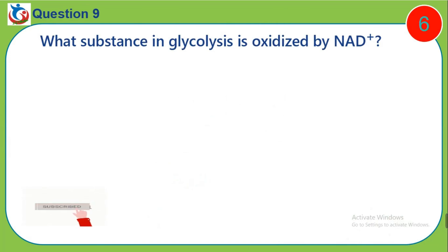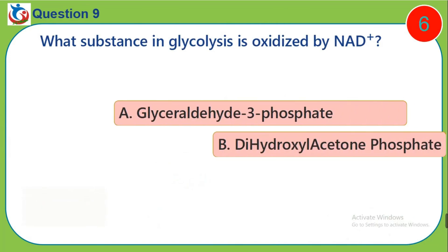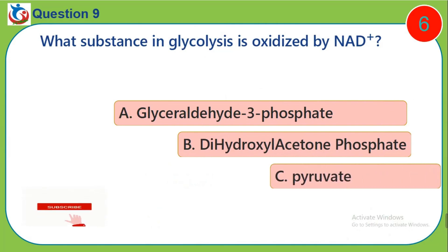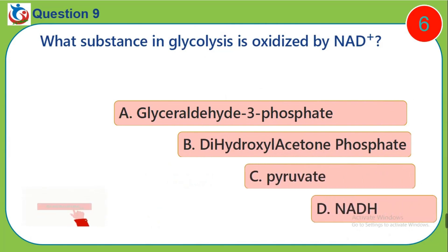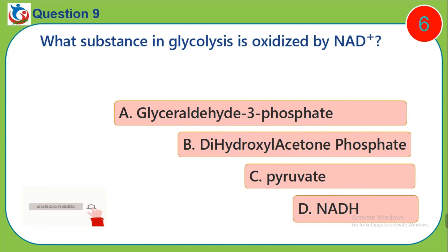Question 9. What substance in glycolysis is oxidized by NAD+? A, glyceridehydryphosphate. B, dihydroxyacetonephosphate. C, pyruvate. D, NADH.